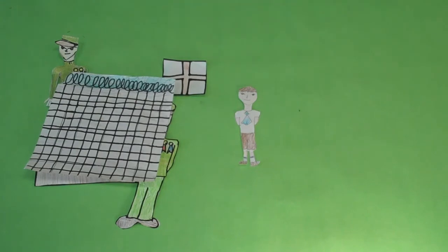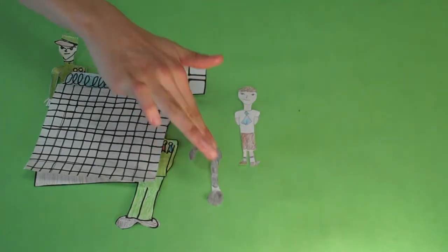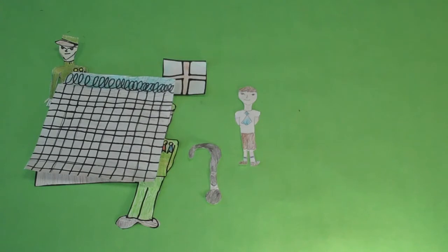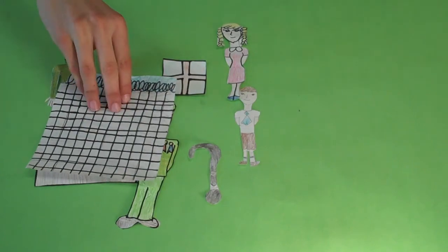They try to explain to each other what they could possibly be doing there, but fail to come up with a logical explanation. They decide to call them farmers. They notice that all the people on the other side of the fence are wearing the same set of grey and white striped pajamas.